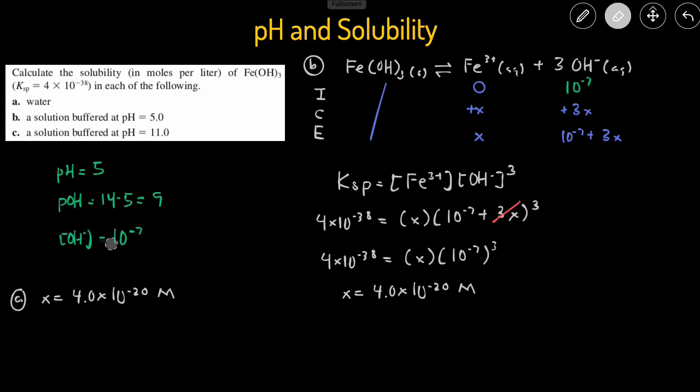And then the OH will be 10 raised to the power of negative pH, or sorry, 10 raised to the power of negative pOH. So 10 raised to the power of negative 9. We'll come back over here and change this to negative 9 and change this to negative 9. So everything else is the same. We're just going to be changing the negative 7s to negative 9s. And so the x value is going to equal this value, Ksp divided by 10 to the negative 9 cubed. And that gives us 4.0 times 10 to the negative 11.